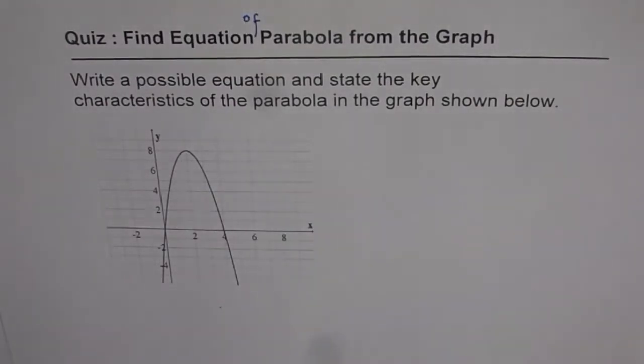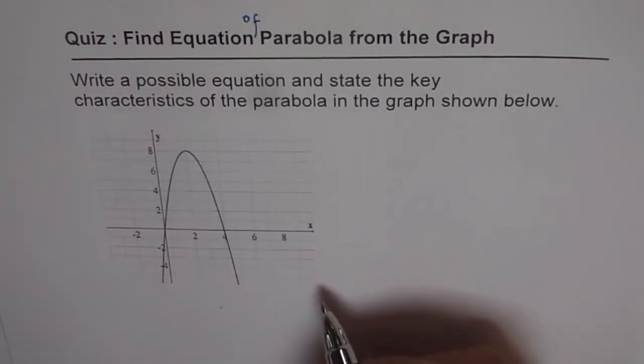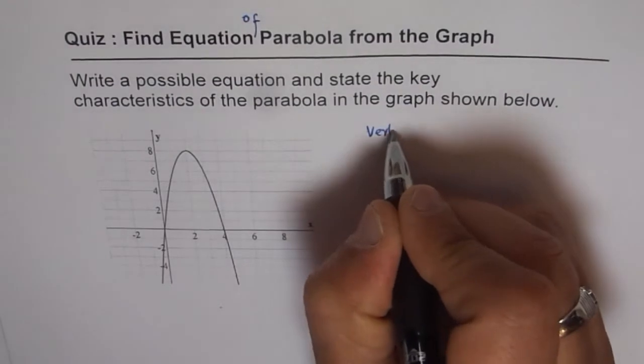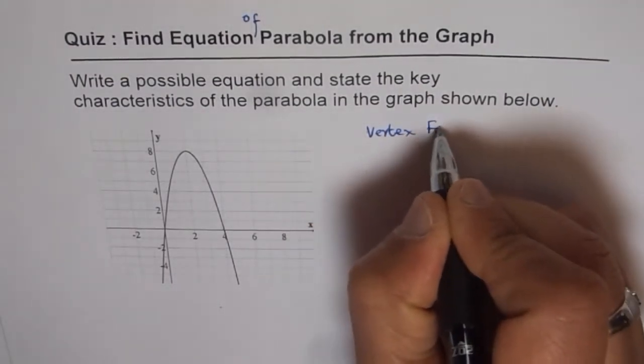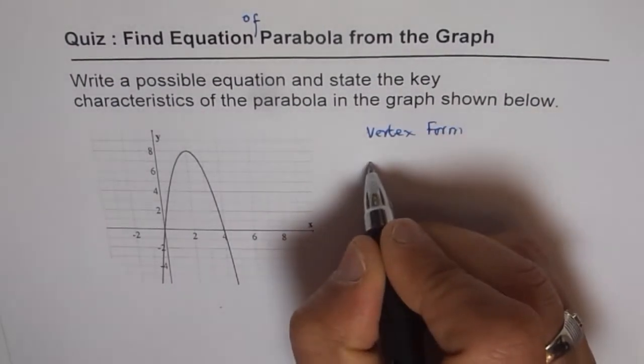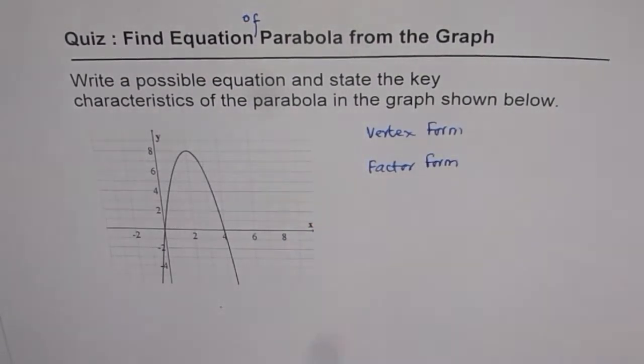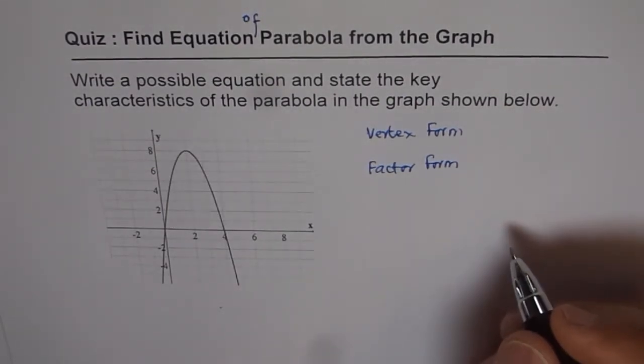Whenever you have a parabola and need to write its equation, the two forms which are very good to work with are: one is the vertex form, and the other is the intercept or factored form. These are the two forms which help you write the equation of a parabola from the graph.